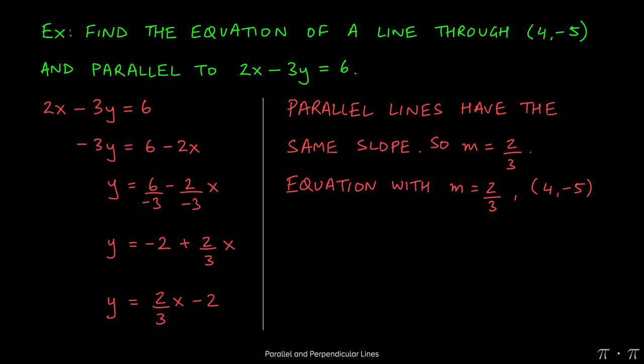So really what we have to do is find the equation of the line that has this slope, 2 thirds, and passes through 4 comma negative 5. And we certainly know how to do this. Since the question doesn't tell us which form we need to use, or give the answer in, we're going to assume the path of least resistance, which is the point-slope form.